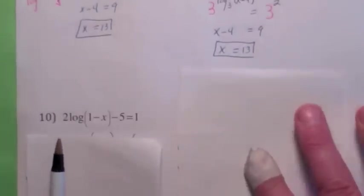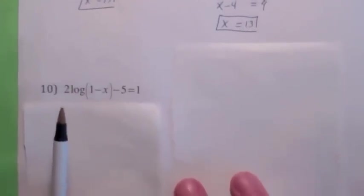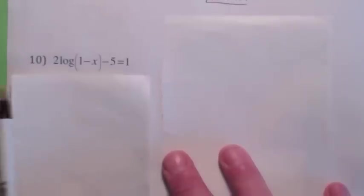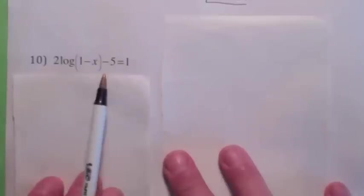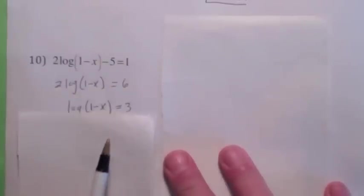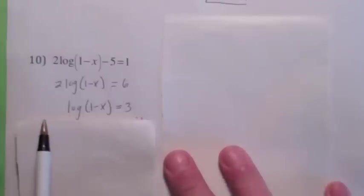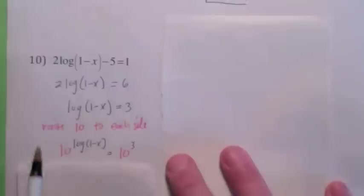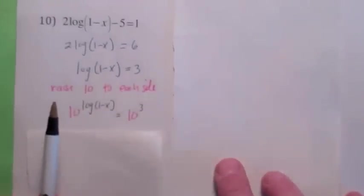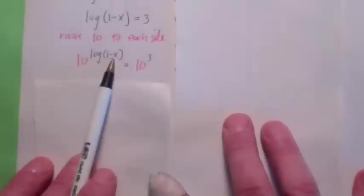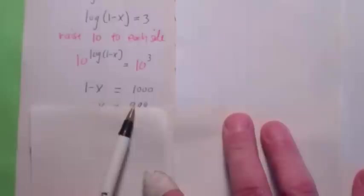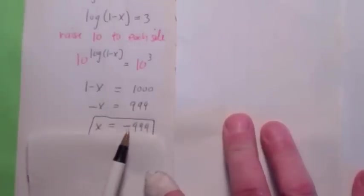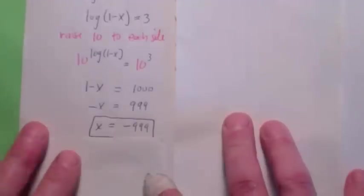To solve a log equation like 2·log(1 minus x) minus 5 = 1, first get the logarithm by itself, just like we had to isolate the exponential first. Add 5, then divide by 2 to get the log isolated. Now raise 10 to each side. Remember: 10 to the log base 10 of a blob is just the blob, so the left side becomes 1 minus x and the right side becomes 1,000. Subtract 1 and multiply by negative 1, giving x equals negative 999.